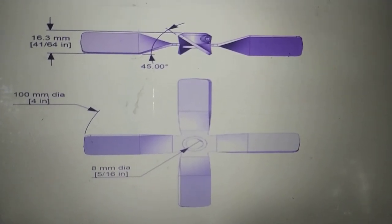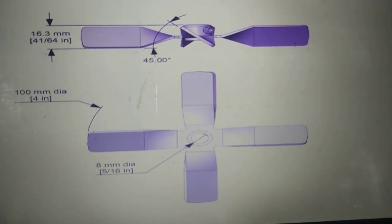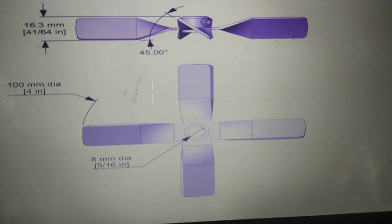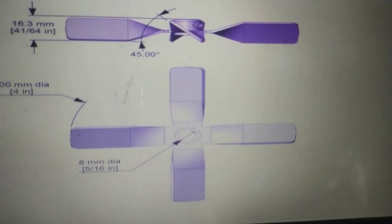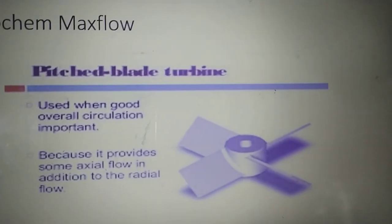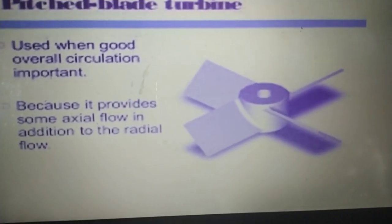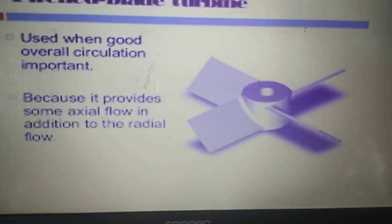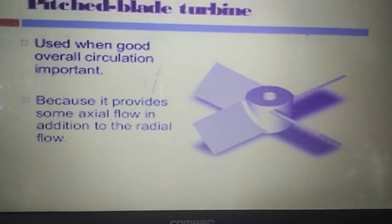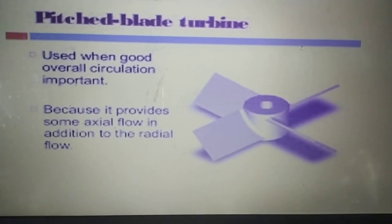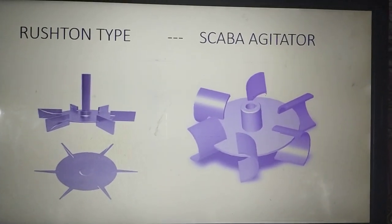Looking at angles of fixtures: the impeller blade diameter is 16.3 mm at a 45-degree angle, and another is about 400 mm diameter, with an 8 mm diameter hub, at a 90-degree fixture. This is called the Procam Max Flow type — blades at 45 to 60 degrees providing very good axial flow in addition to radial flow. To recollect: radial flow means the media goes down along the wall and back to center; radial flow also involves two-way flow upward and downward.